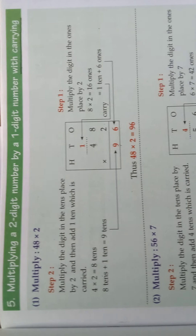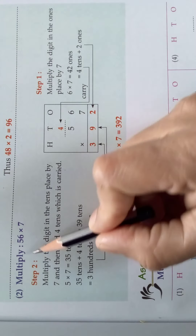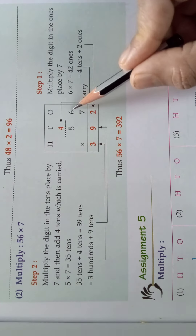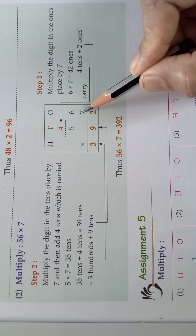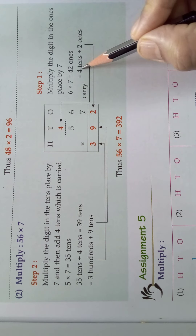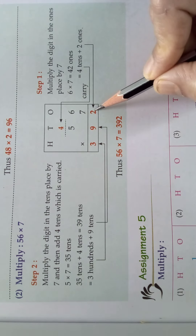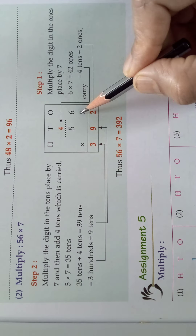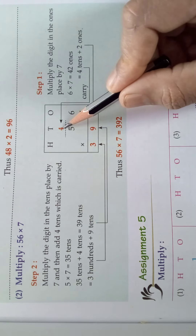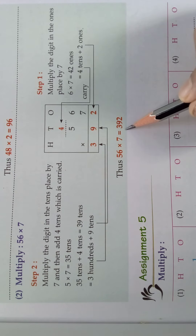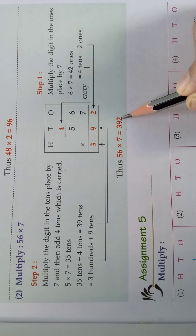Now the next example: 56 multiplied by 7. First take the ones-place digit 6 — 6 sevens are 42. 42 is 4 tens plus 2 ones, so write 2 in the ones place and carry 4. Now multiply the tens-place digit 5 by 7 — 5 sevens are 35, then add the carry: 35 plus 4 is 39. So 56 into 7 equals 392.